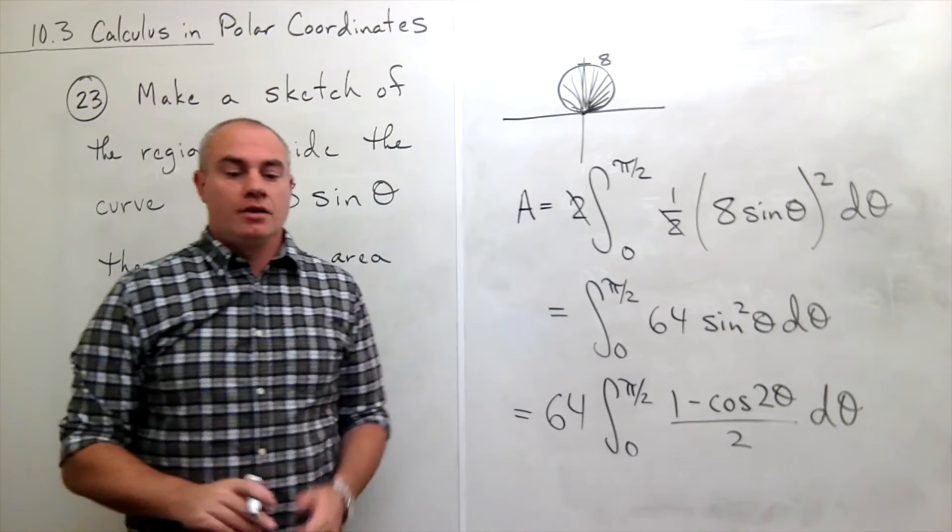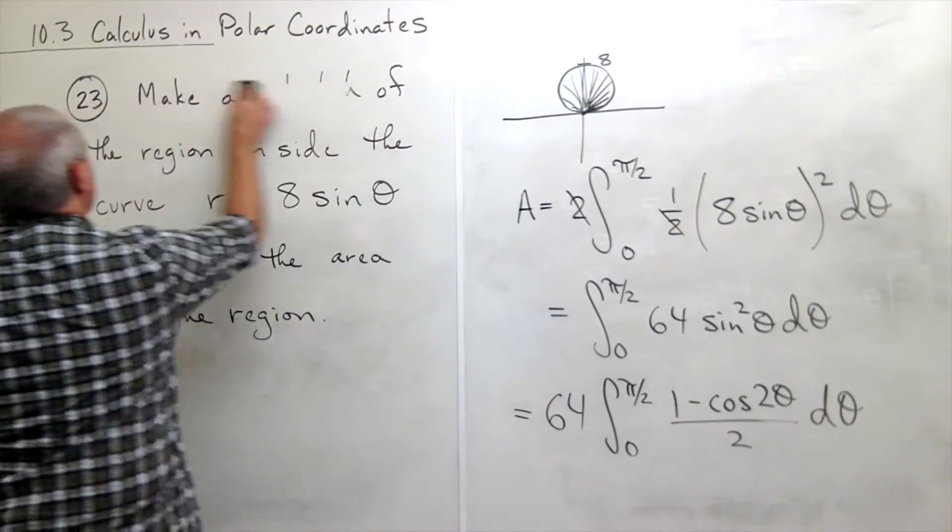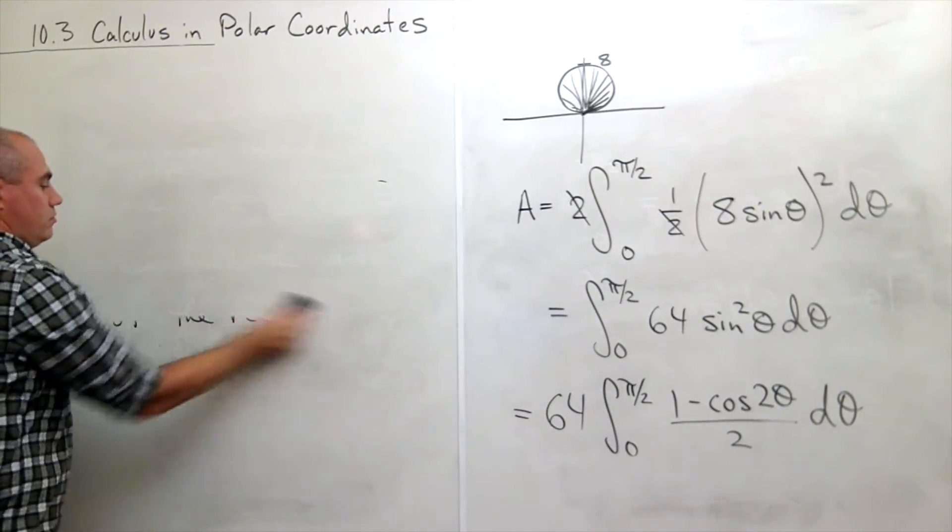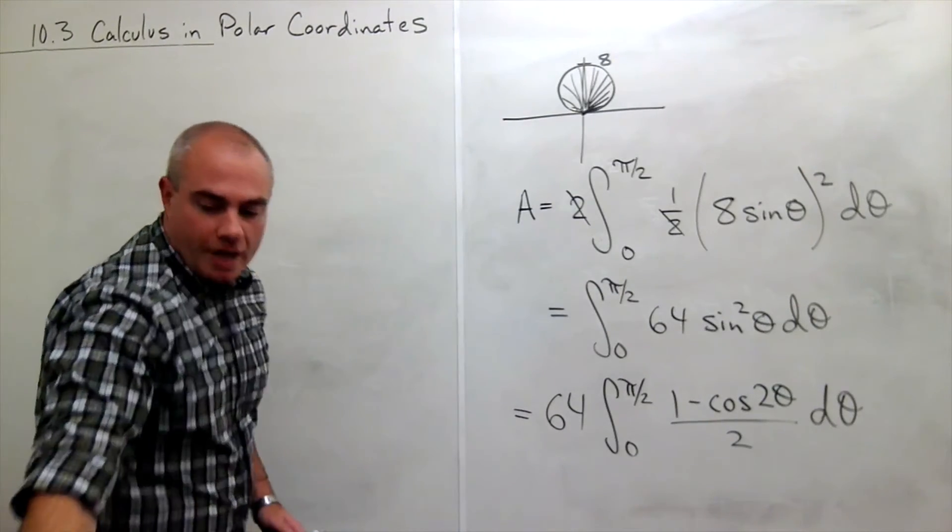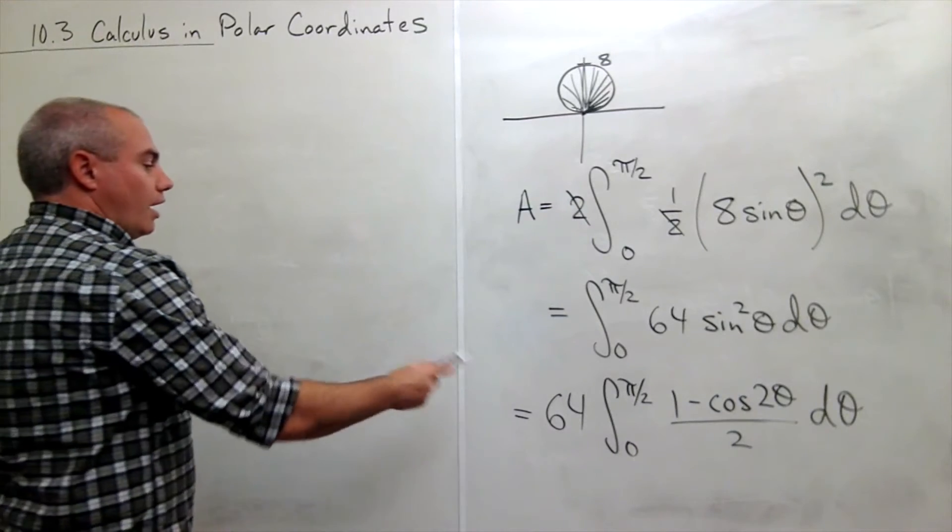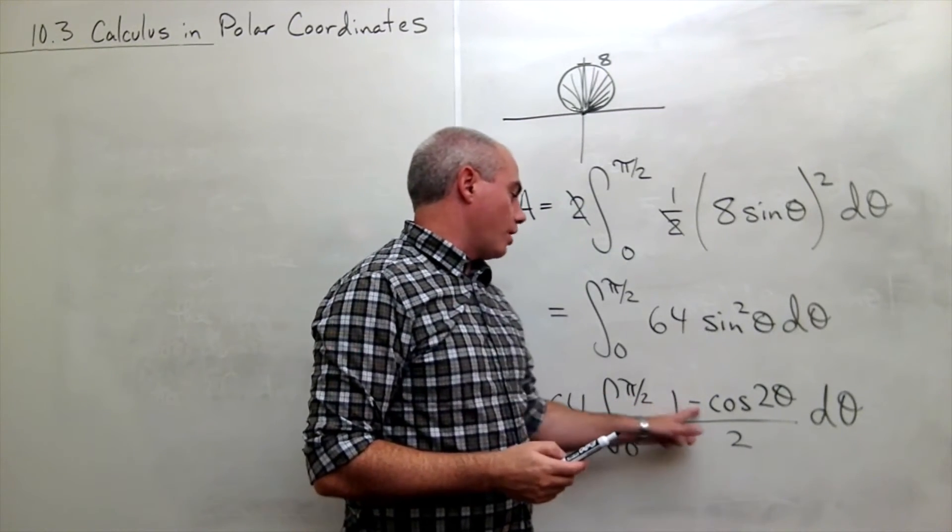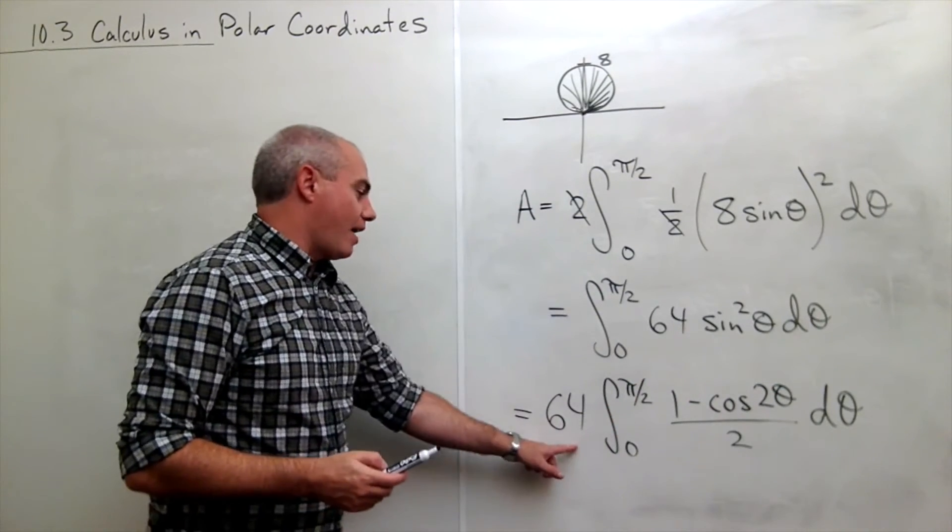All right, let's keep going. I'm going to move over here. So now we have, notice I have a 1 half multiplied by this 1 minus cosine 2 theta. I can pull the 2 out.